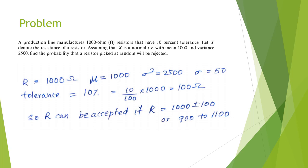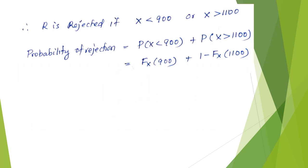A 10% tolerance means the allowable range is 1000 ± (10% of 1000) = 1000 ± 100, so acceptable values are between 900 and 1100 ohms. A resistor is rejected if X < 900 or X > 1100. The probability of rejection = P(X < 900) + P(X > 1100) = F_X(900) + [1 - F_X(1100)].